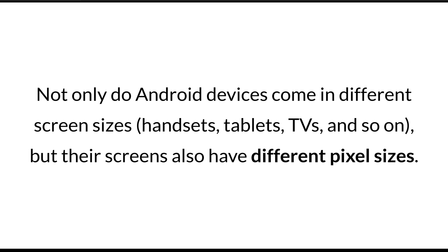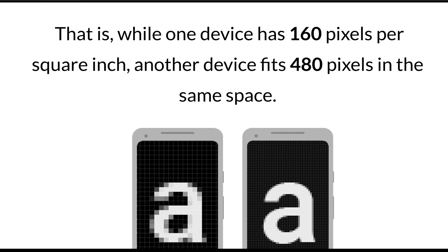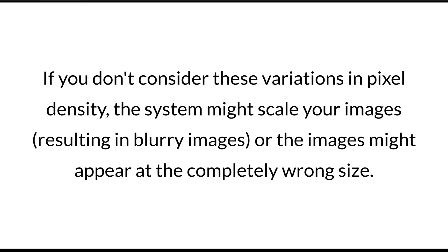Not only do Android devices come in different screen sizes — handsets, tablets, TVs and so on — but their screens also have different pixel sizes. This is quite important to understand, because one device might have 160 pixels per square inch while another fits 480 pixels in the same space. This difference can really matter because there are so many Android devices out there. If you don't account for variations in pixel density, the system might scale your images resulting in blurry images or images appearing at completely the wrong size.